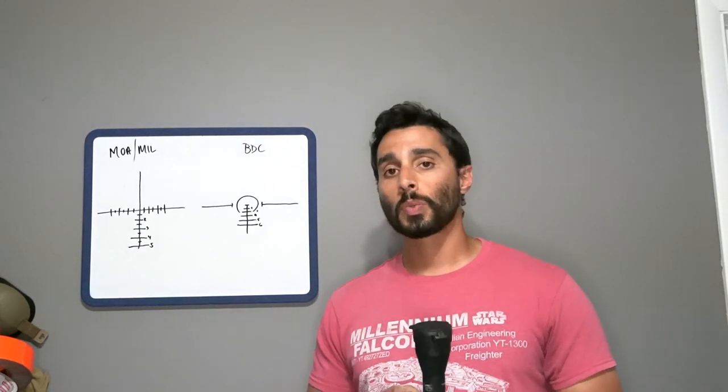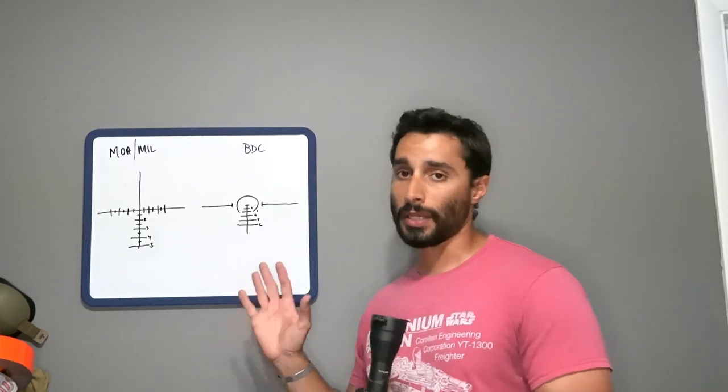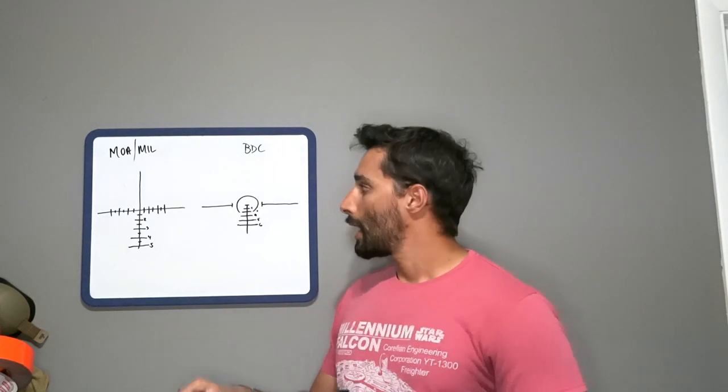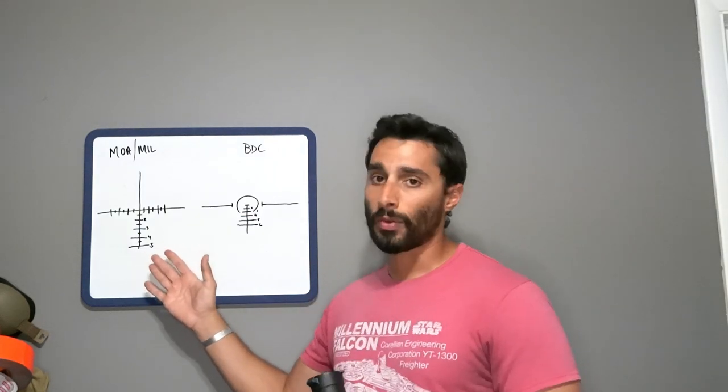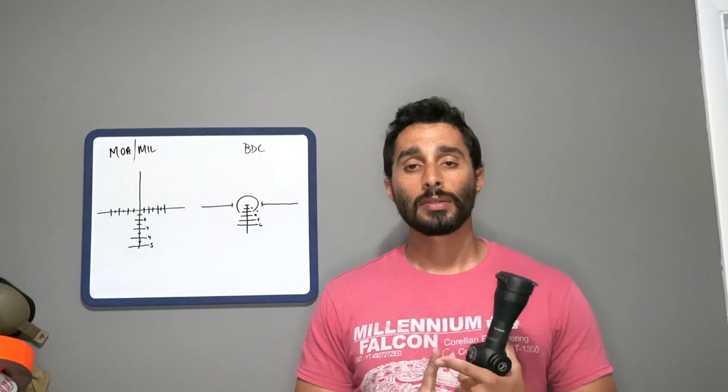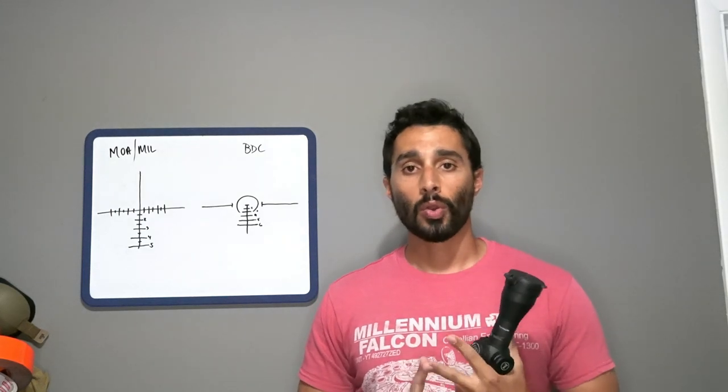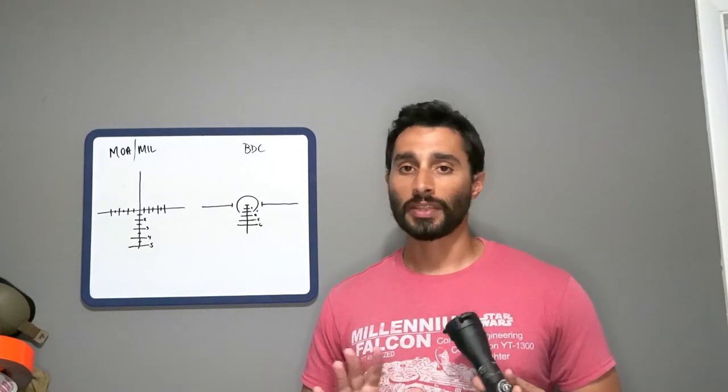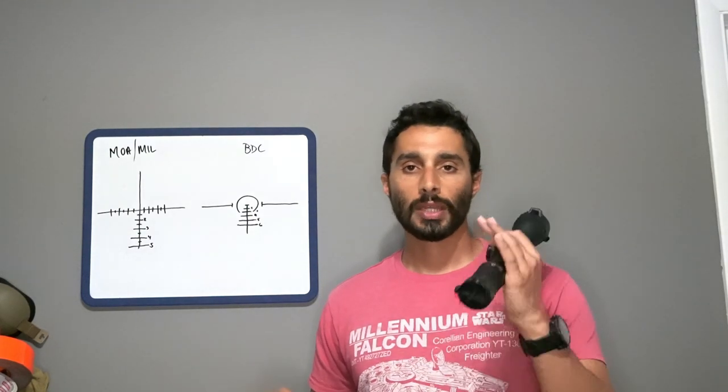Now, there's a couple of reasons why and we'll go through each of them. The differences here, really quick, is an MOA or MIL style reticle is using MOA, or minute of angle, or MIL radians, which are both just units of measurement. Nothing fancy, it's like a ruler in your scope.